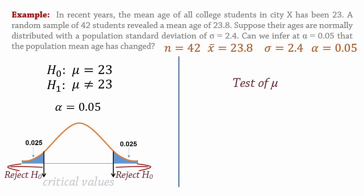For single population mean tests, we either conduct a z-test or a t-test. If the population standard deviation sigma is known, a z-test is employed. And if the population standard deviation is unknown, a t-test is used.